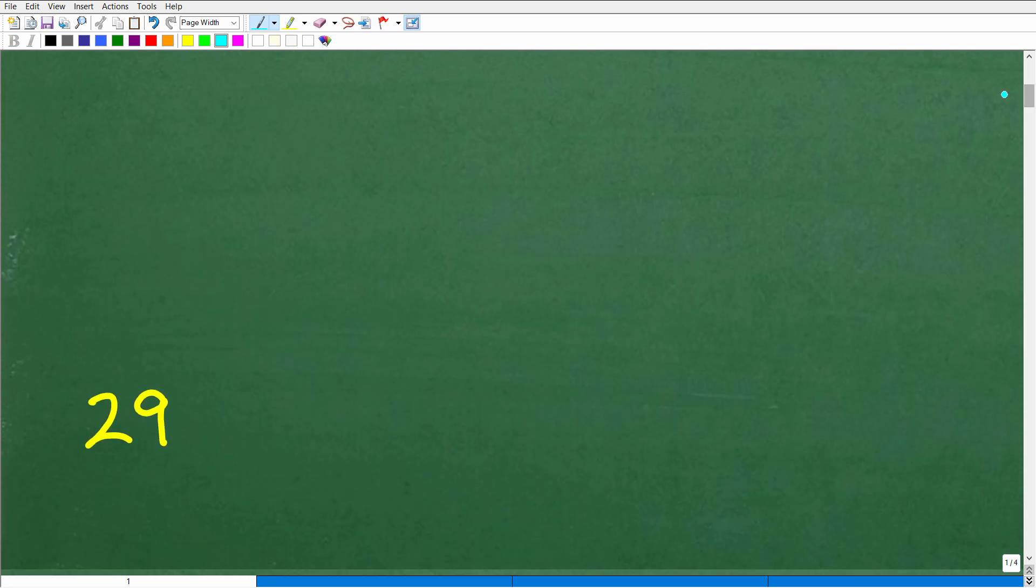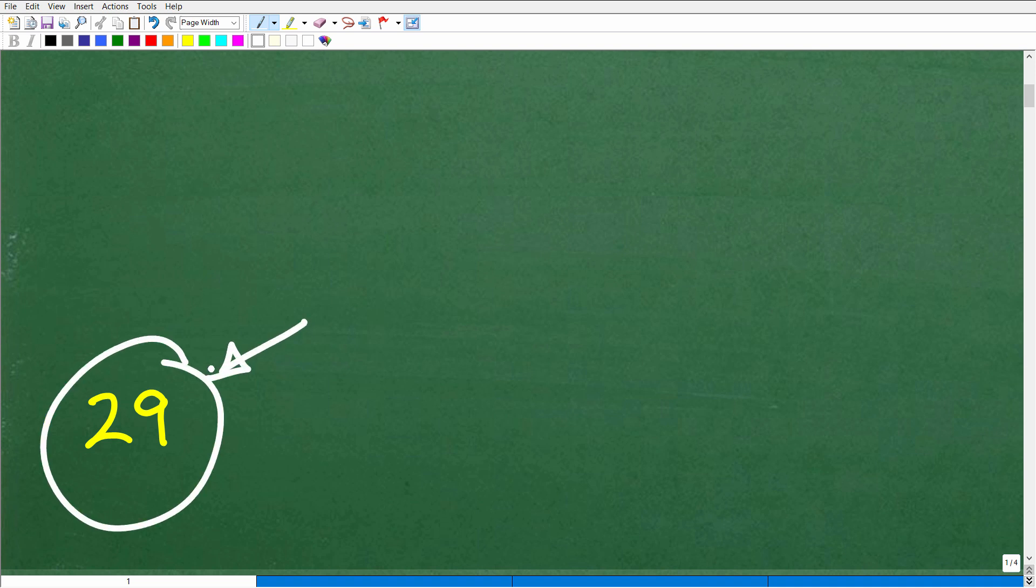Well, if you got this right, you would have gotten the answer 29. Okay, so maybe you've got a different answer. You're like, no, you're wrong, Mr. Math Teacher. It's a different number.